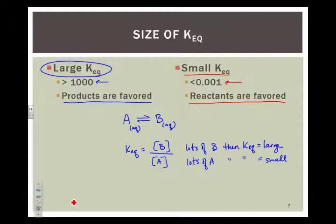Now, the mathematically astute among you are wondering what the heck happens between 999 and 0.001. Well, that's sort of this region where we don't know for sure whether one or the other is favored. What we say is that there are large amounts of both.